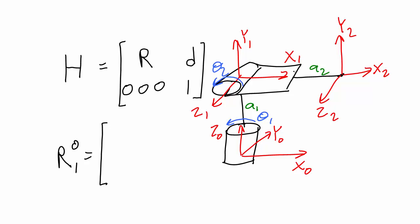We would see that the x0 and x1 axes are in the same direction, which means that we can get the 0 frame to match the 1 frame by rotating around x. If we rotated 90 degrees around x, that would place the y0 axis in the same direction as y1 and the z0 axis in the same direction as z1. That would give us a rotation matrix that would look like this.